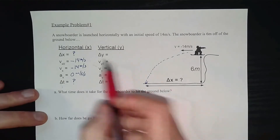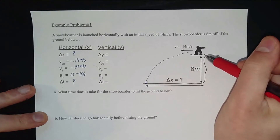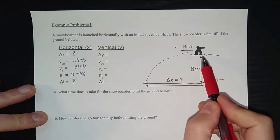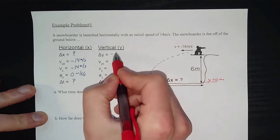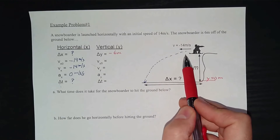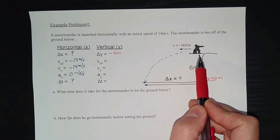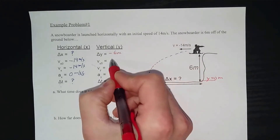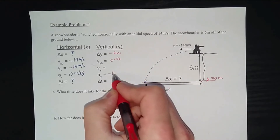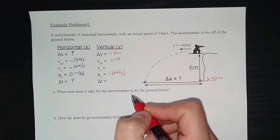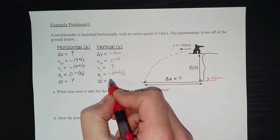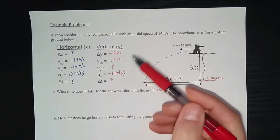For the vertical part of the motion: they start six meters off the ground, so their change in vertical position is negative six meters — a negative vertical displacement. Since the snowboarder is truly launched horizontally, the initial velocity in the y direction is zero. As soon as they leave the cliff, all projectiles in the absence of air resistance accelerate downward at negative 10 meters per second per second. The final vertical velocity and the time are both unknown.